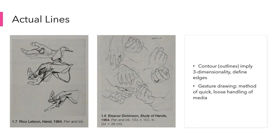Eleanor Dickinson's drawings are careful and precise. They really define the anatomy of the hands. Lines here are used to define the form, shape, and spatial qualities that hands can possess. Rico Lebrun's drawings also define the anatomy of the hands — you can tell those are hands and where the knuckles are — and they also used contour lines. But in these drawings, we see a greater sense of the hands' movement through his gestural handling of the medium. A gesture drawing is a method of quick and loose handling of media — the artist drew the hands more quickly with less precision, as a quick, expressive gesture. Very sketchy.